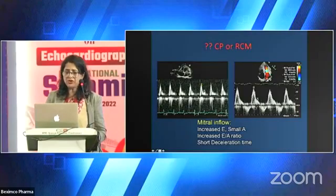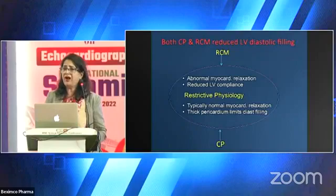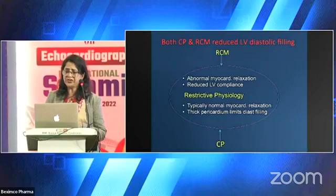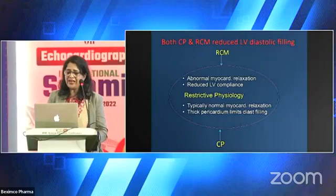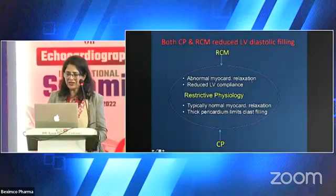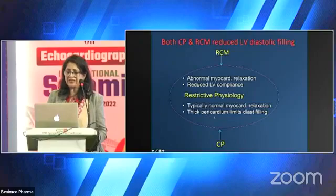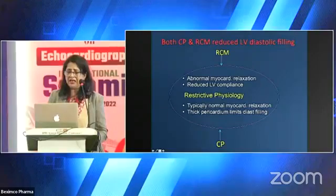This is because both diseases have a problem with diastole. Diastole is affected both in restrictive cardiomyopathy and constrictive pericarditis. In restrictive cardiomyopathy, it is due to abnormal myocardial relaxation, which results in reduced LV compliance. Whereas in constriction, it is the thick pericardium which limits diastolic filling, and myocardial relaxation is typically normal.